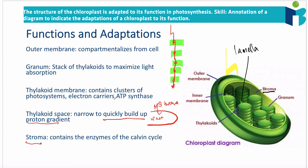Finally, we have the stroma, which contains all of the enzymes necessary for the Calvin cycle. In order to go from RuBP to glycerate 3-phosphate to triose phosphate and so on, you need certain enzymes. We don't really talk about the enzymes in the Calvin cycle except for Rubisco, but you do need enzymes to generate that process, and so the fact that the stroma has these enzymes is a specific adaptation.